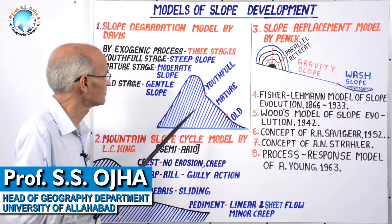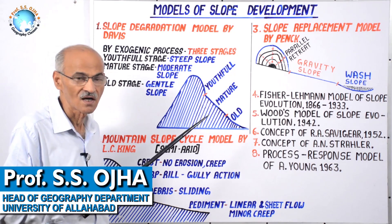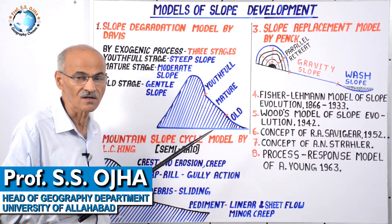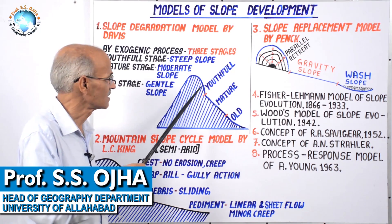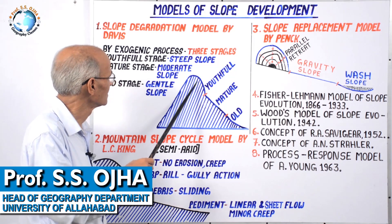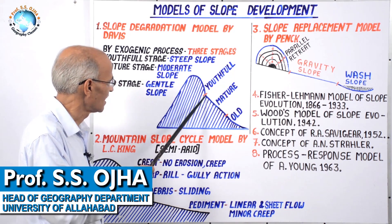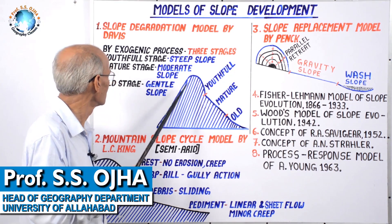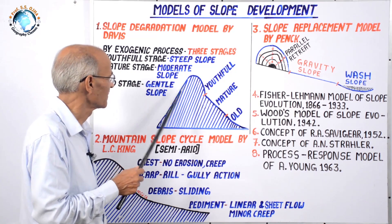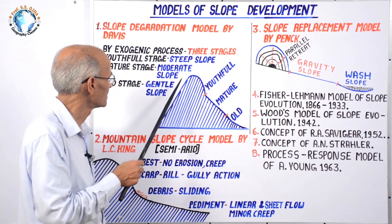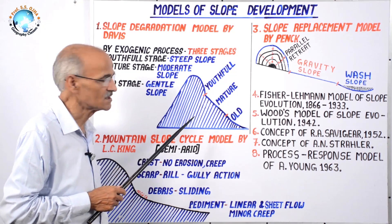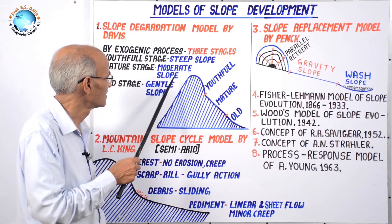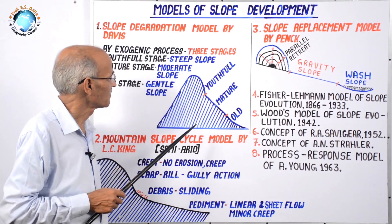In the youthful stage, there is steep slope — absolute relief is very high and relative relief is also very high — due to vertical erosion by rivers. High vertical irregularity can be traced in this stage.